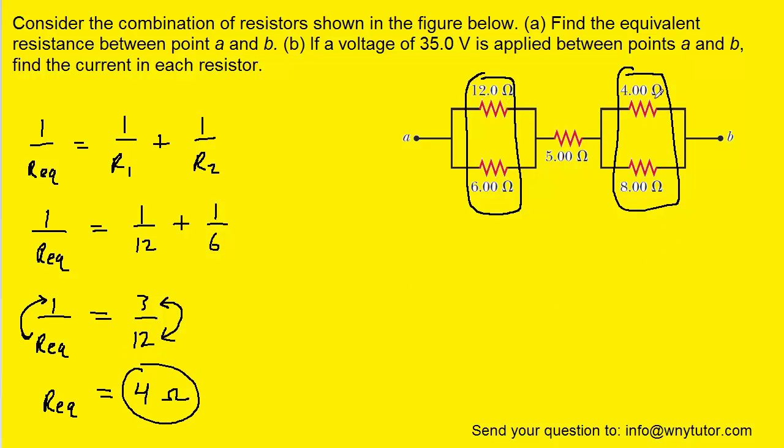We're going to do the same analysis for the other two parallel resistors. We can plug the 4 ohms in for R1 and then the 8 ohms in for R2, add these two fractions together, and then invert both sides of the equation. The equivalent resistance of those two resistors is 8 thirds ohms.